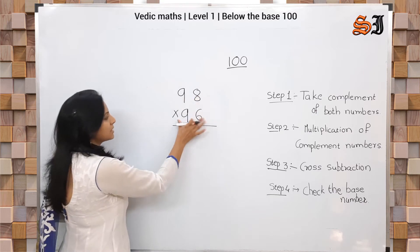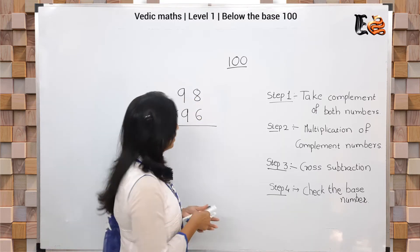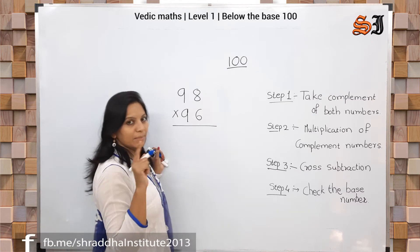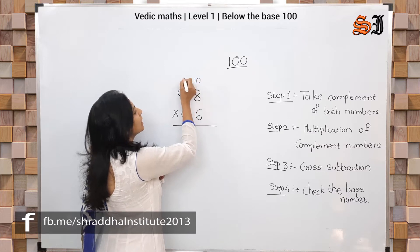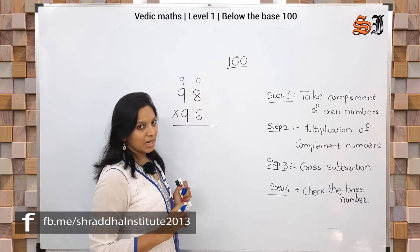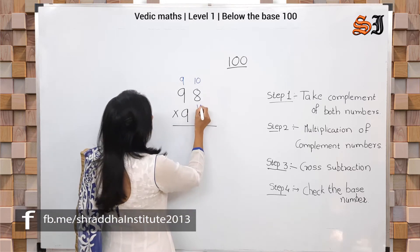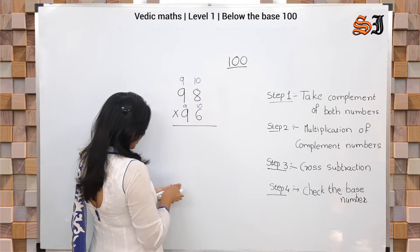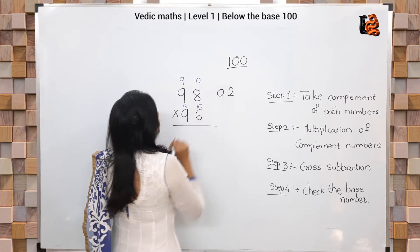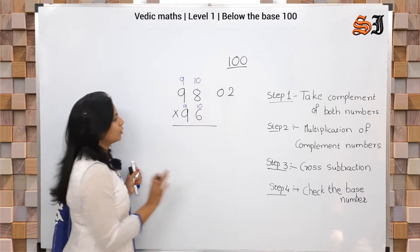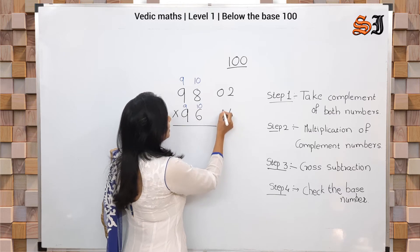We have two numbers and we need to find the compliment of each. The compliment is important. To find the compliment: for the units digit, subtract from 10; for the tens digit, subtract from 9. So for 98: units — 10 minus 8 = 2; tens — 9 minus 9 = 0. The compliment of 98 is 02. Then for 96: 10 minus 6 = 4; 9 minus 9 = 0. Compliment of 96 is 04.